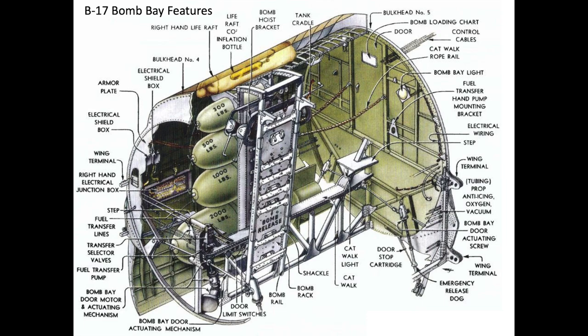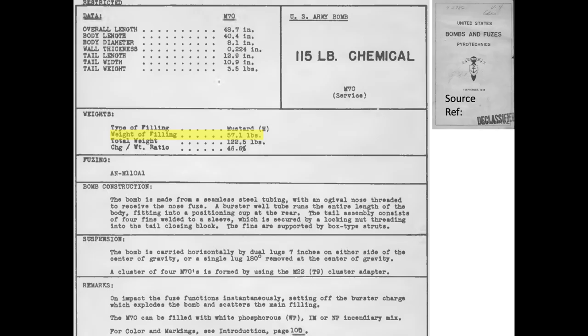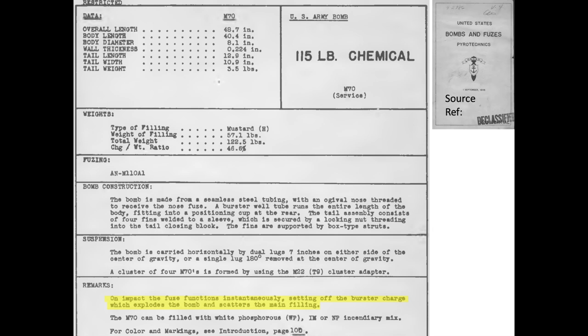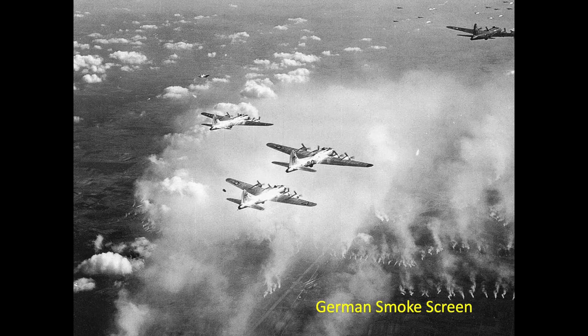Each B-17 will carry 42 100-pound class mustard bombs in the plane's bomb bay. 57 pounds of the mustard agent will be contained within the M-70 bomb, as shown in this image from the September 1945 U.S. Bomb and Fuses Manual. The M-70 bomb and bomb components are shown in this image. Upon impact, the fused detonation train will explode the bomb, sending case fragments and mustard gas liquid agent radially outward. The wind would carry the mustard gases through the urban target zones and beyond, similar to these German smokescreen images.